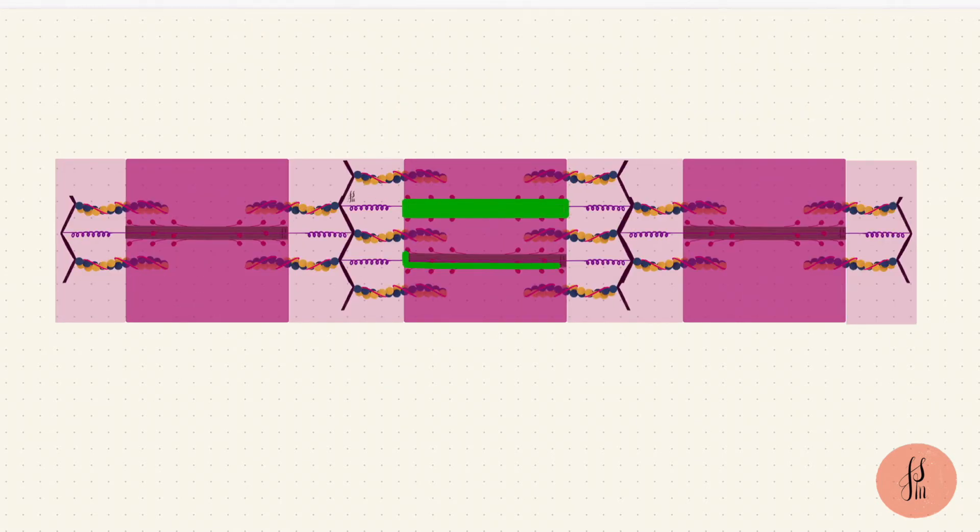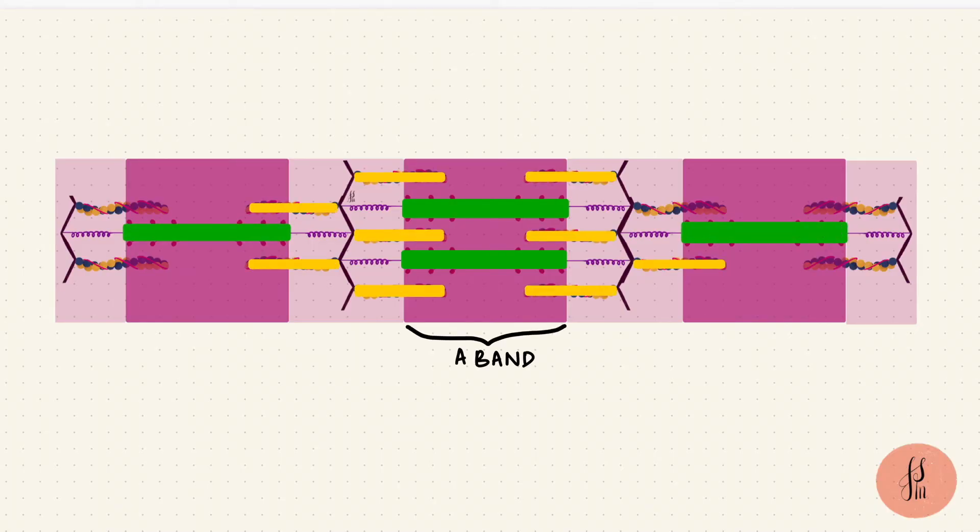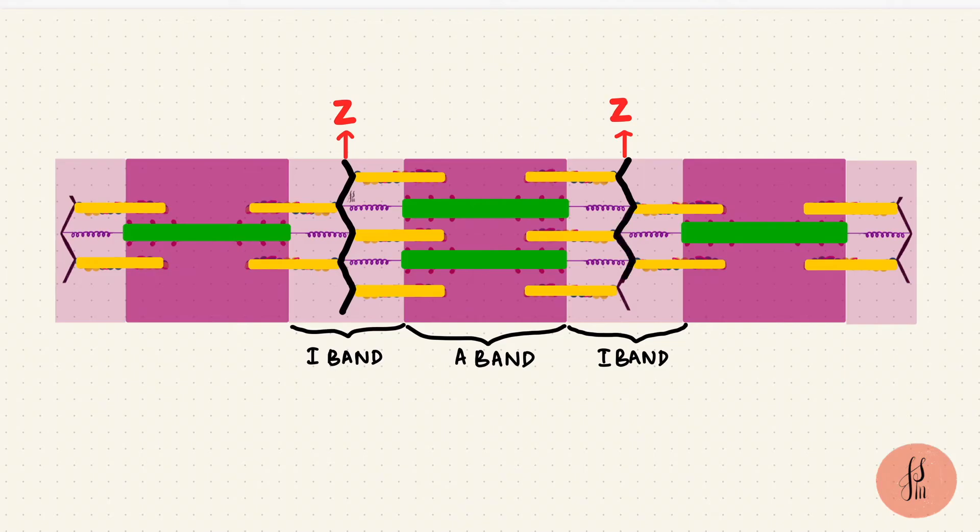The portion with just myosin forms the dark A band, while the sides with the thin filaments form the I band. The thin filaments attach to the Z disk. So that's the dark line in the center of the I band. The region between two Z disks forms a sarcomere, and this is the unit of contraction for a skeletal muscle.